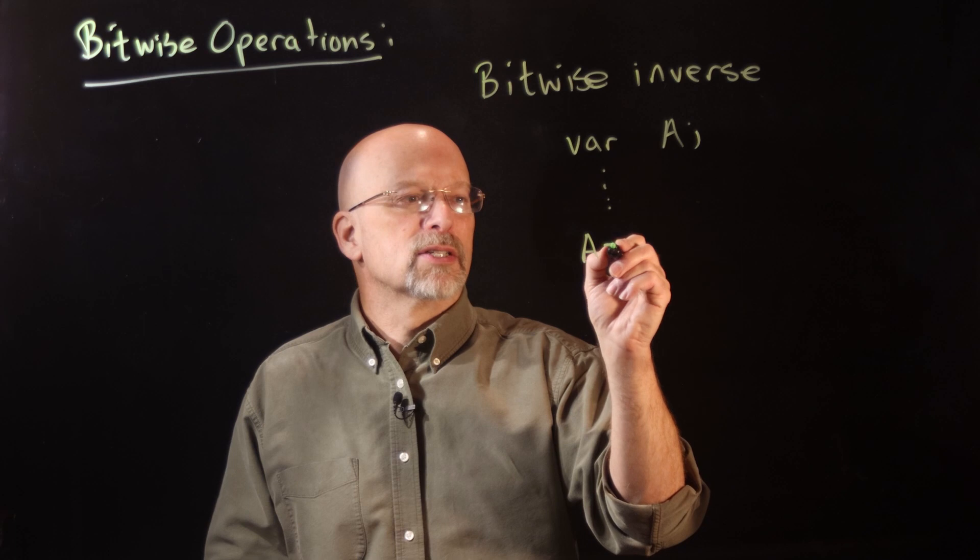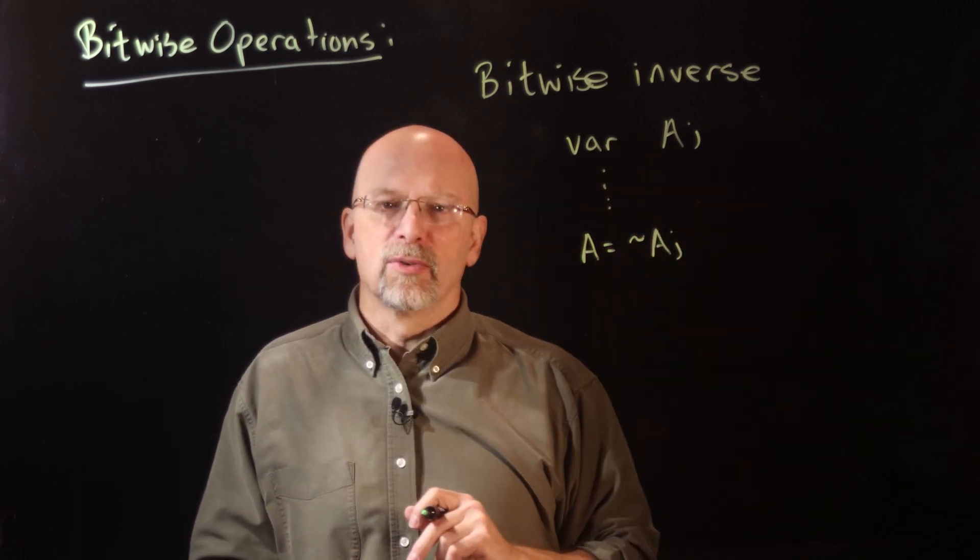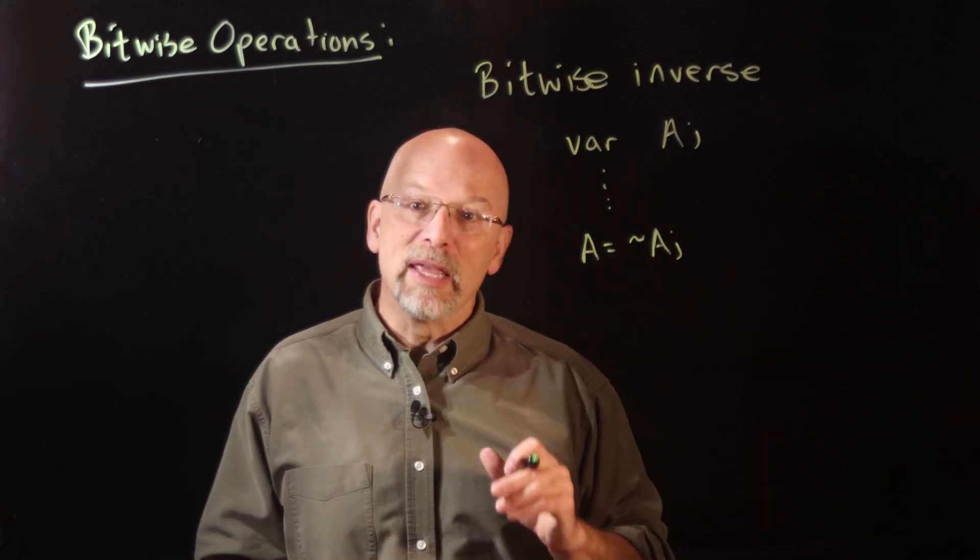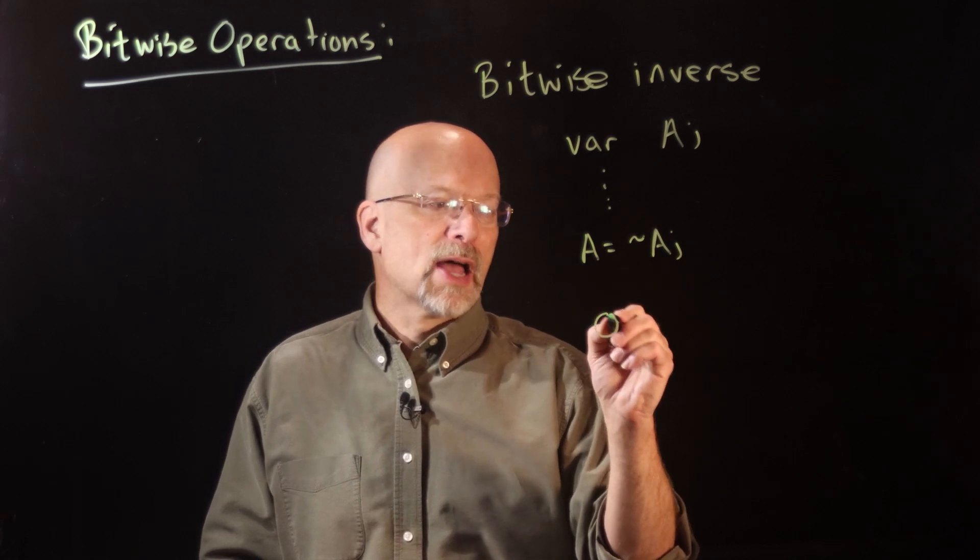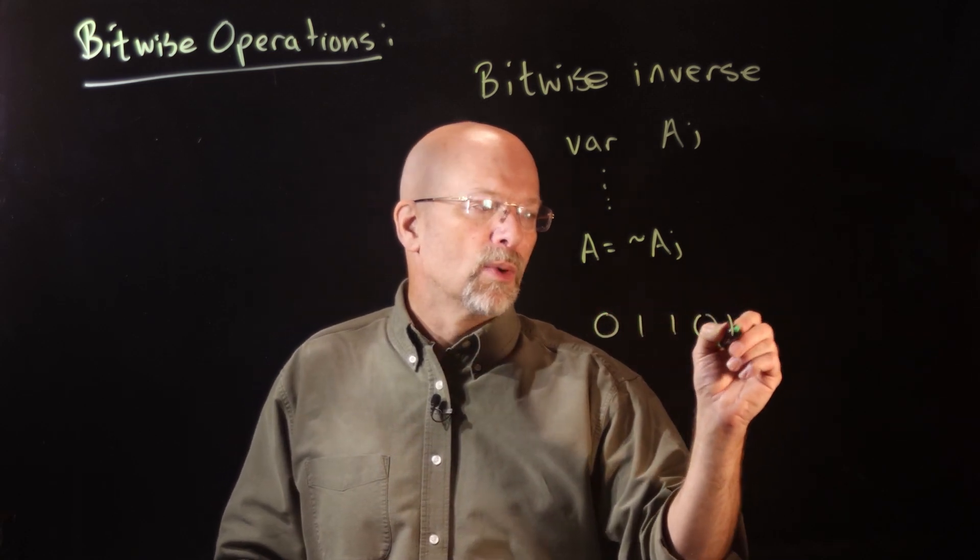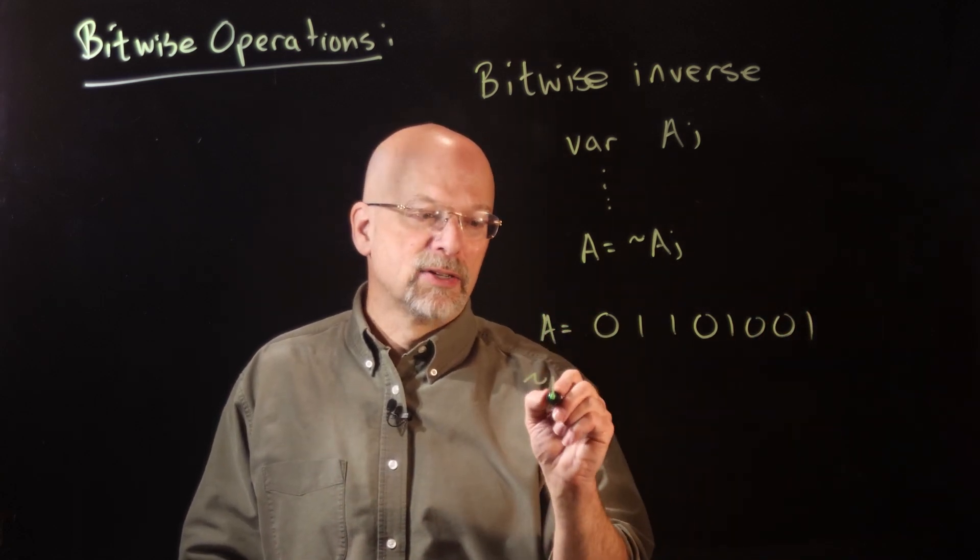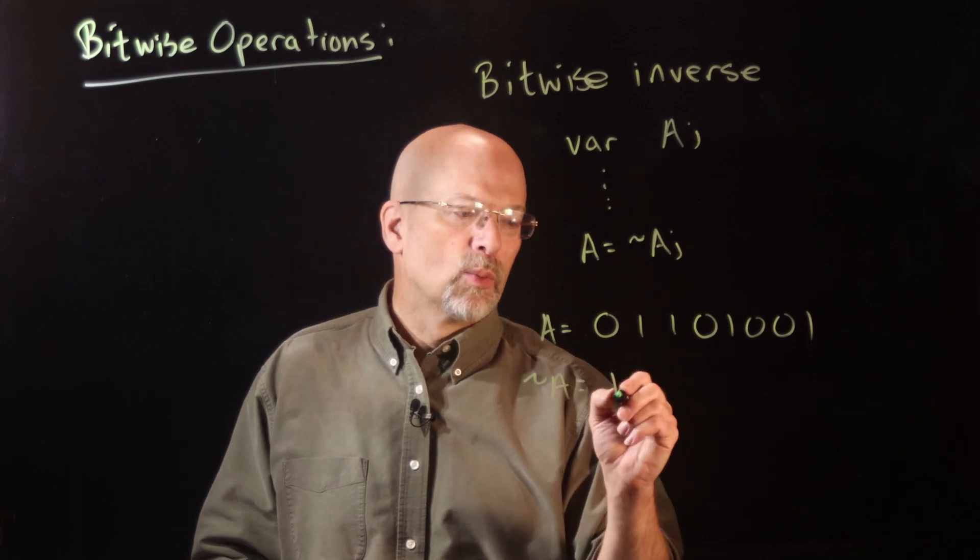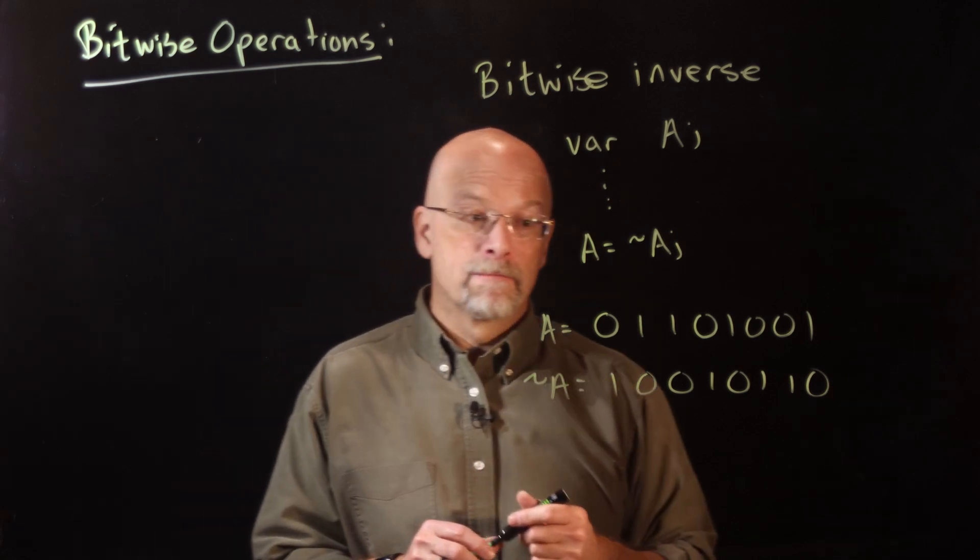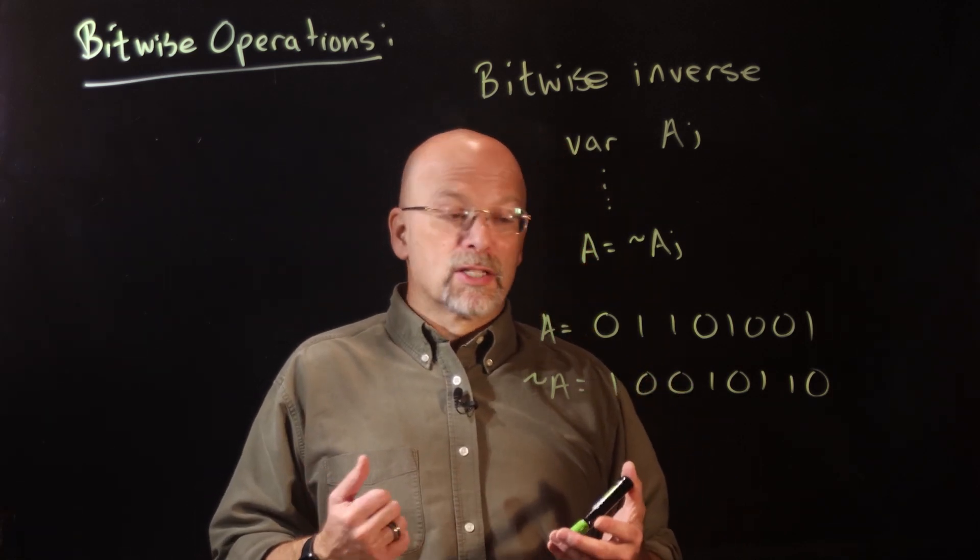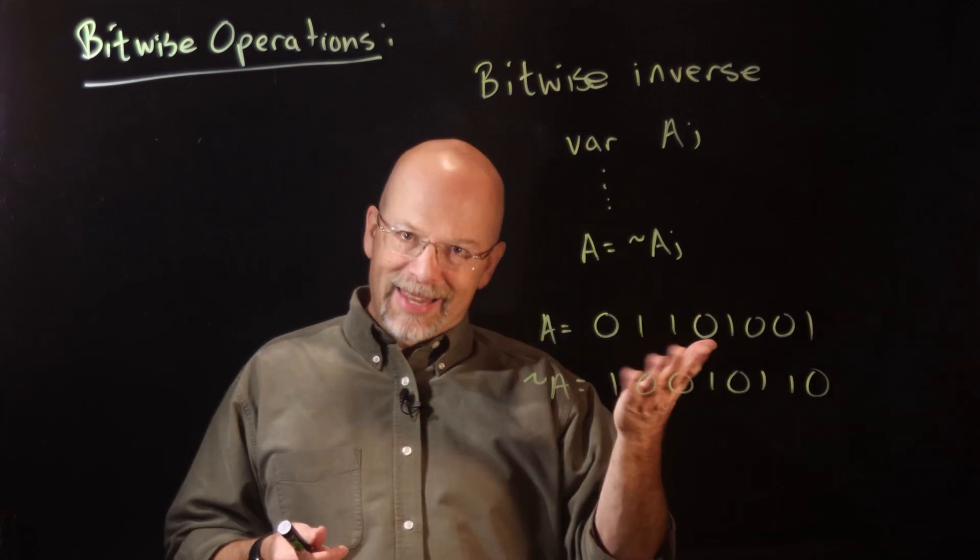The way that you do this is you use the tilde. This tilde right here is going to make it so that all the bits will be flipped in an integer value. So, for example, if the original value was 01101001, and that was the original value of what was in A, tilde A is going to be equal to 10010110. The inverse. And there are a number of things that we can do with this, but right now what we're looking at is if all I want to do is just flip all the bits, that's how it's done.